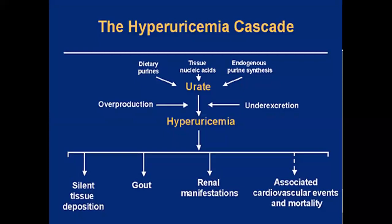This hyperuricemia cascade shows that overproduction from dietary proteins or tissue nucleic acid from endogenous purine synthesis and under-excretion lead to hyperuricemia. When these crystallize, they can be either silent tissue deposition, gout, or renal manifestations with stone formation or nephropathy. Please remember, hyperuricemia is associated with cardiovascular events and cardiovascular mortality.